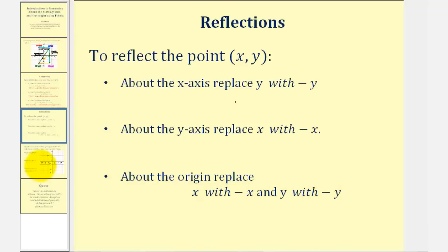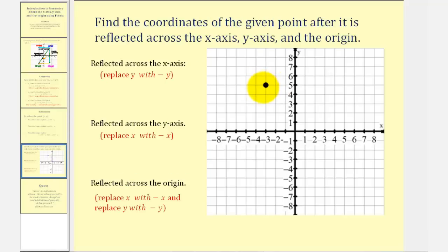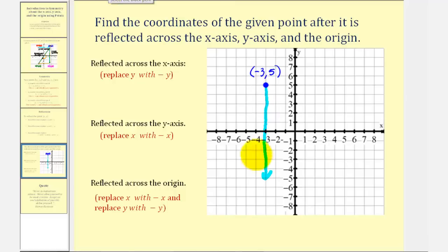So let's take a look at an example. We're given a point on the coordinate plane and asked to find the coordinates of the point after it is reflected across the x-axis, y-axis, and the origin. The given point has coordinates negative three, five. So to visualize this, if we reflect this point across the x-axis, or reflect it across this horizontal axis, the point would go from here to here. Notice how the coordinates of the new point would still have an x-coordinate of negative three, but now the y-coordinate would be negative five, which is the same as replacing y with negative y, or changing the sign of the y-coordinate, to reflect the point across the x-axis. So the coordinates would be negative three, comma negative five.